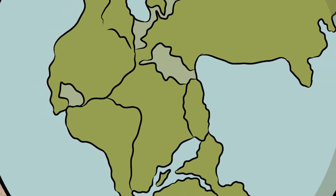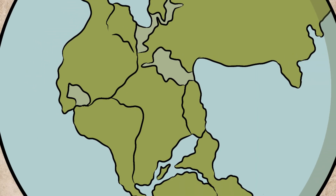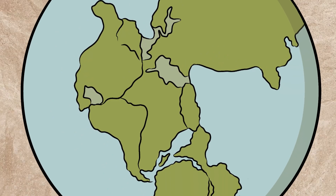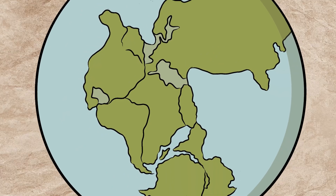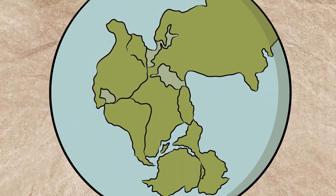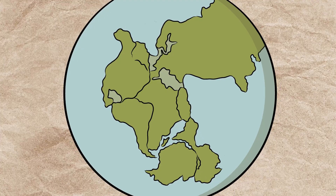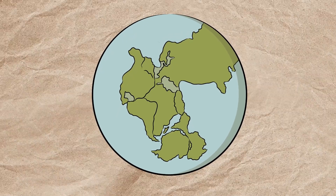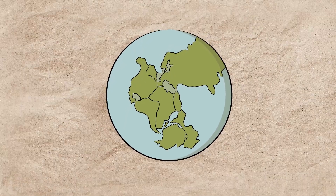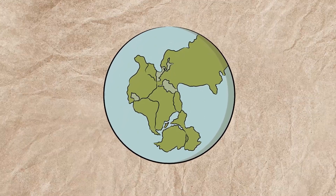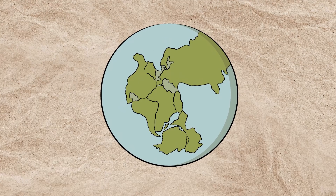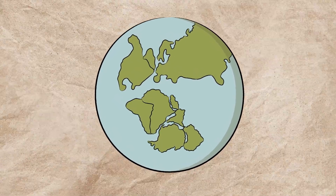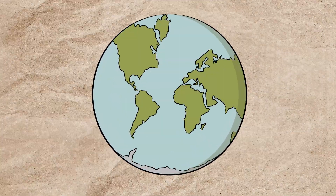Millions of years ago, the Earth looked nothing like it does today. The continents were once part of a massive supercontinent, all connected like pieces of a giant puzzle. Over time, these pieces began to drift, slowly rearranging themselves to create new worlds.